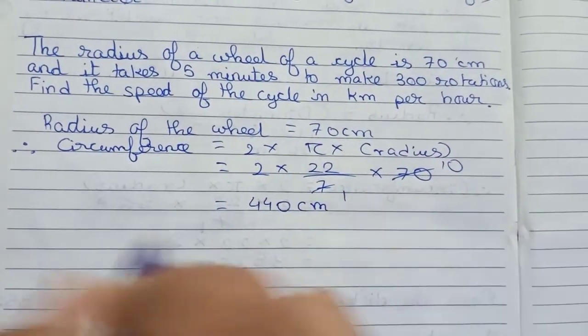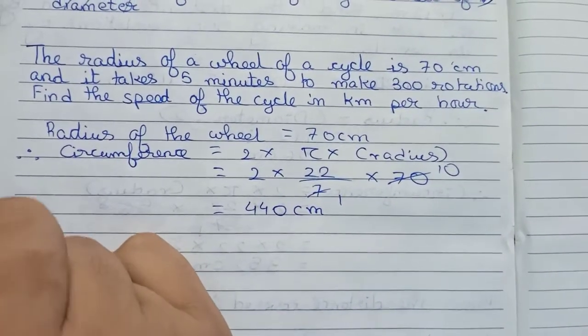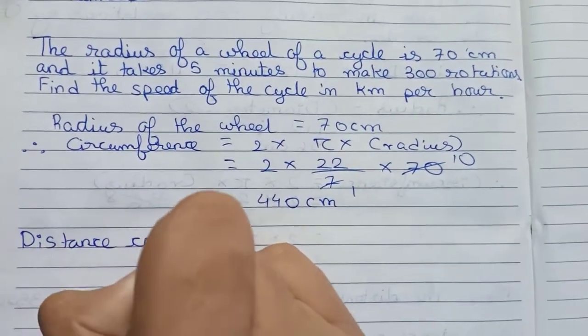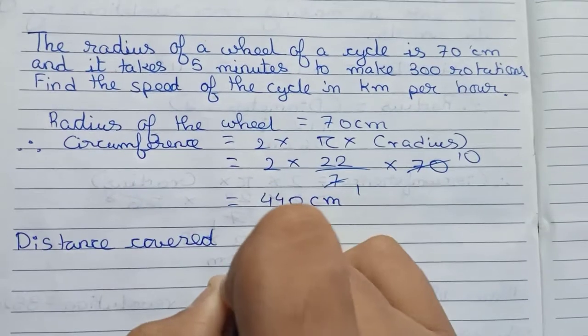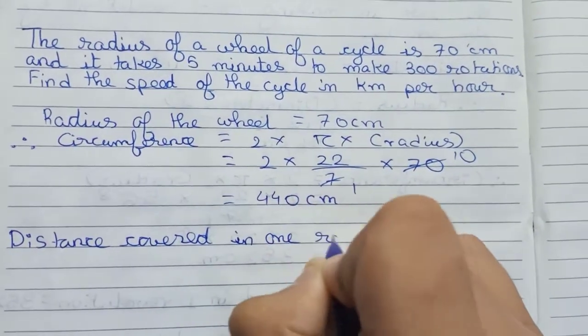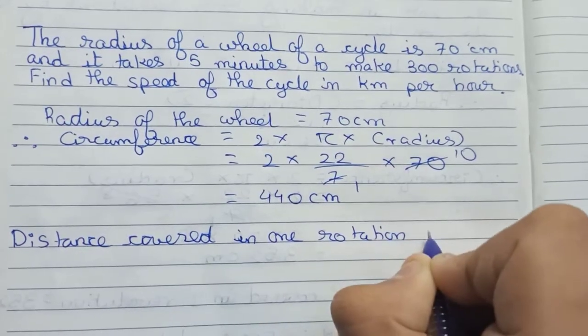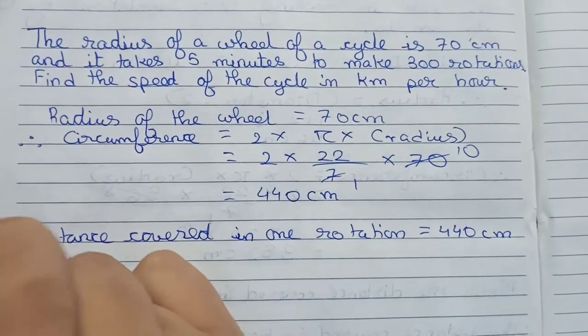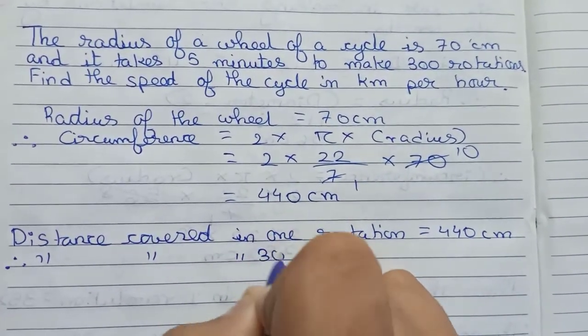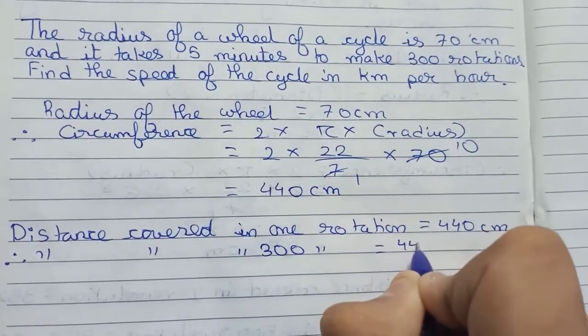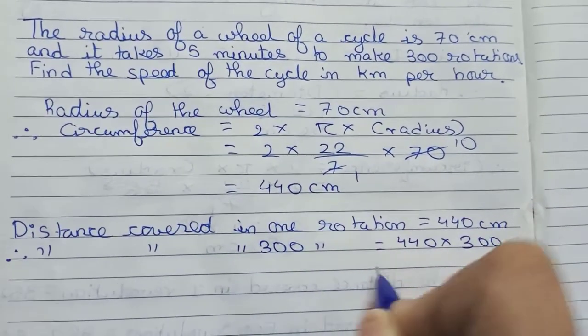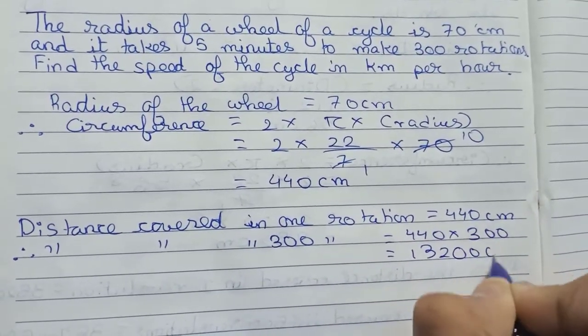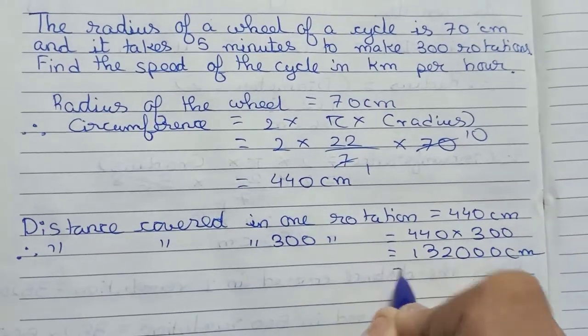So now we write that distance covered in one rotation equals to 440 centimeters. Therefore, the distance covered in 300 rotations equals to 440 into 300, which becomes 132,000 centimeters, which we can write as 1.32 kilometers.